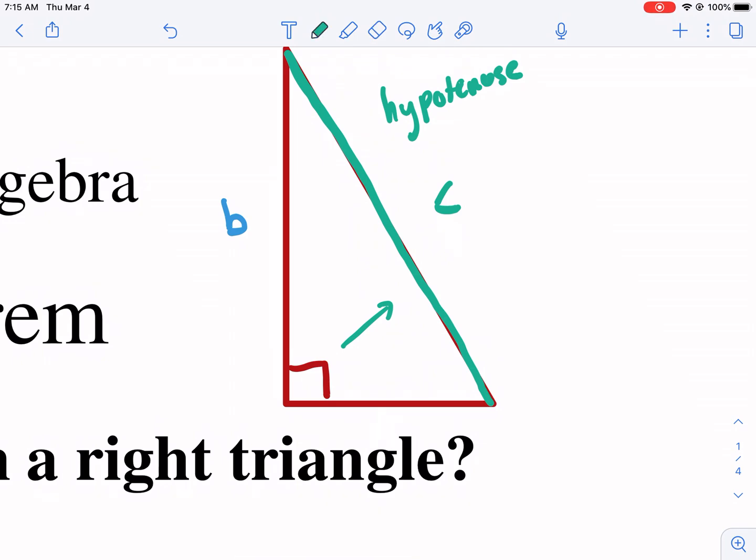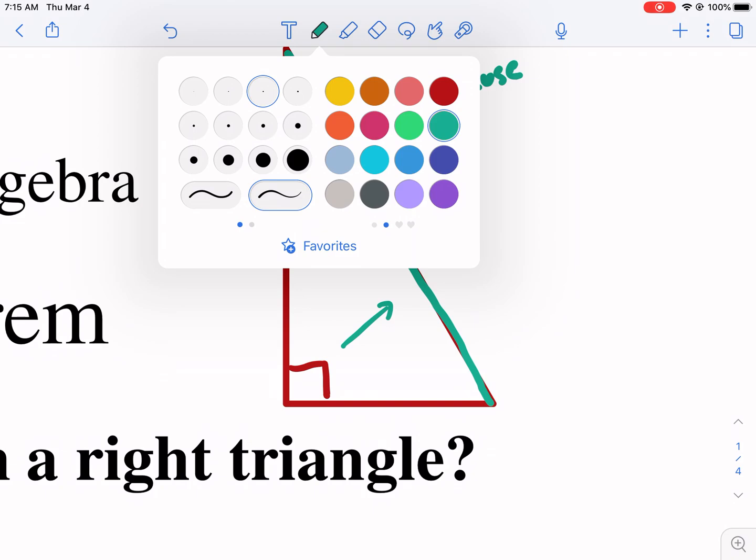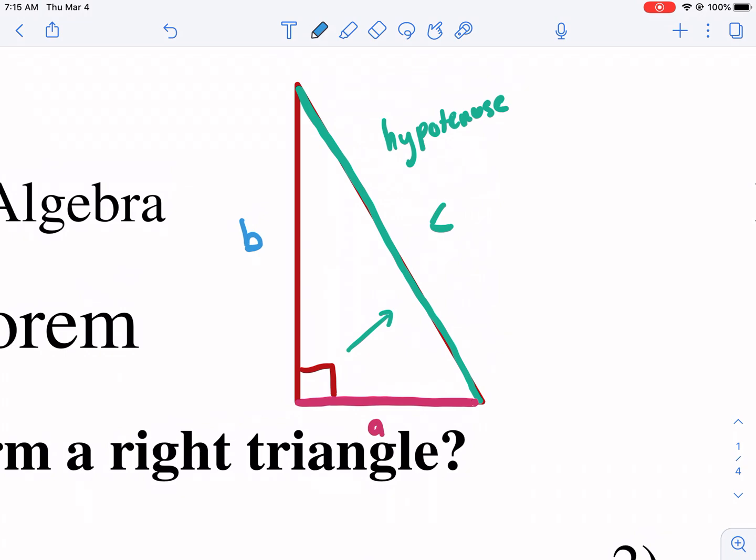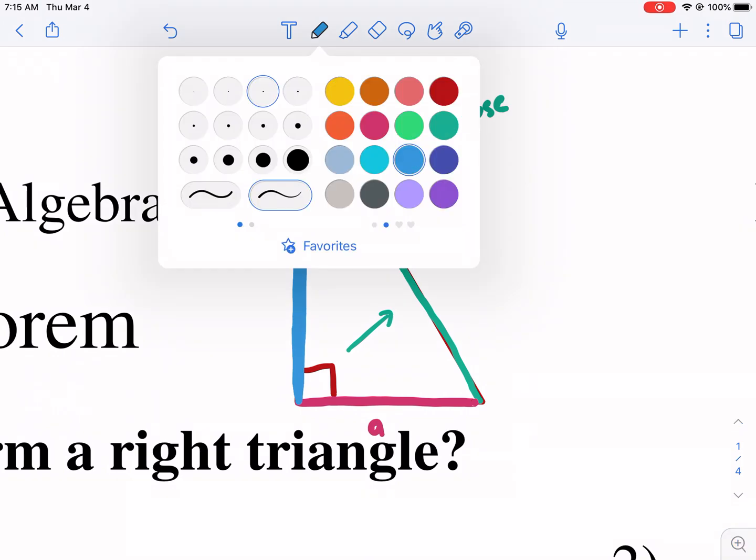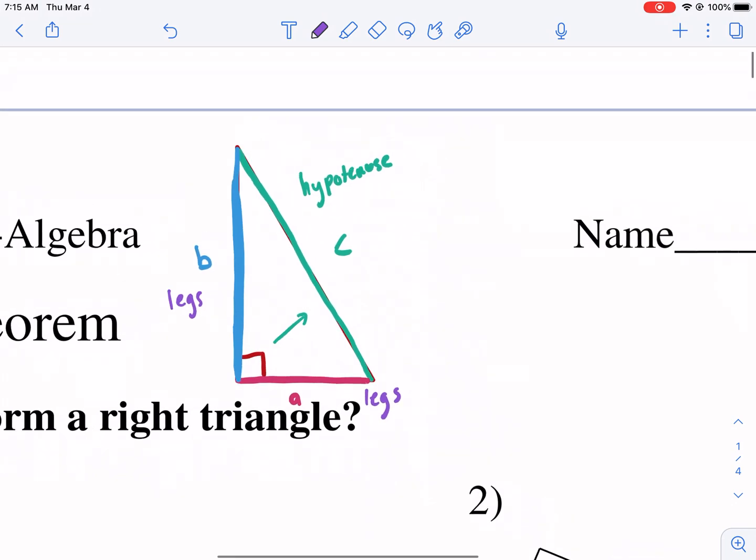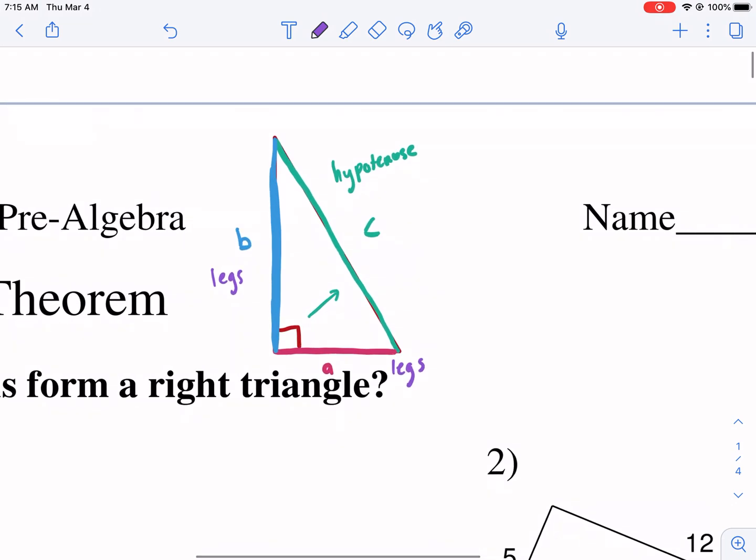The other two sides are called legs. And actually I'm going to change the color. I want three different colors here. So our legs would be this side. The legs are the two sides forming the right triangle, or the right angle I should say. So we have three sides here that form the legs of the triangle. So these are known as legs. It doesn't matter if they're the same length, different length. Because the Pythagorean theorem applies to both those situations.